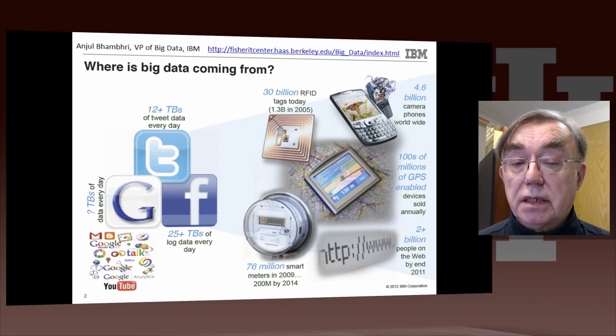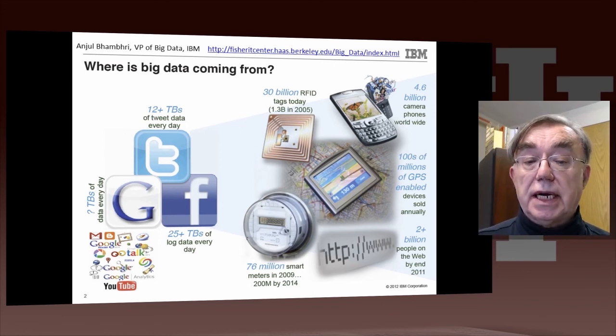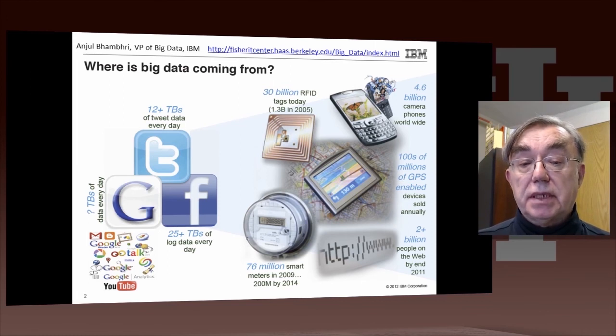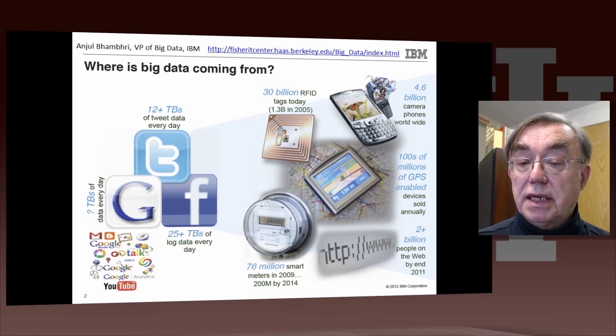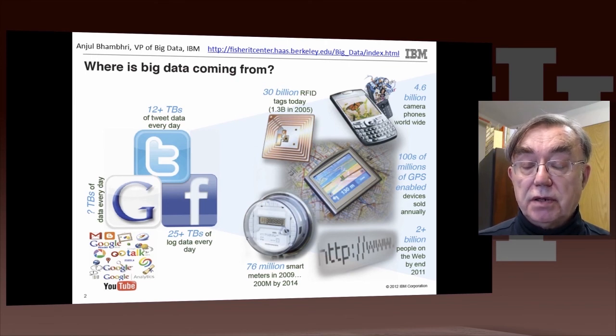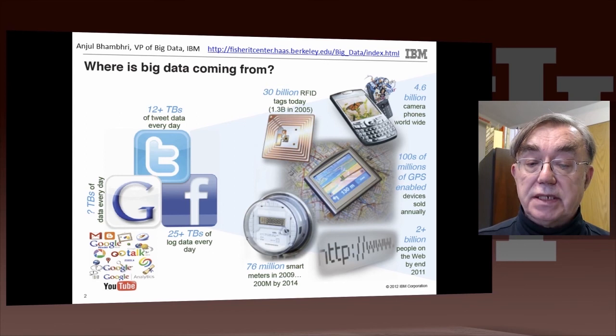Other important data sources are RFID tags, which are basically describing the inventory and location of entities in industry. There are 30 billion of such tags already today. There were only 1.3 billion in 2005. We have 4.6 billion camera phones available. So that's responsible for the explosion in uploaded images. And of course, we have hundreds of millions of GPS devices. That GPS data is driving the data deluge.